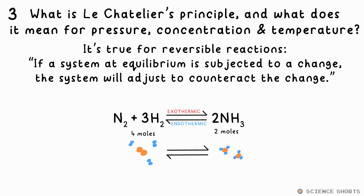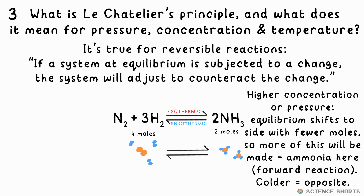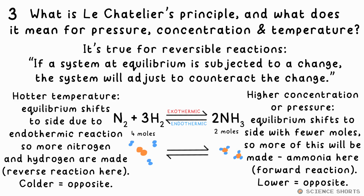In practice, a higher concentration or pressure will favour the reaction that makes the fewest moles — in this case, that's the forward reaction. So increasing the concentration or pressure will make more of what's on the right. Increasing temperature favours the endothermic reaction: the hotter it is, the harder it is for the exothermic reaction to produce heat, and of course the opposite is true as well.